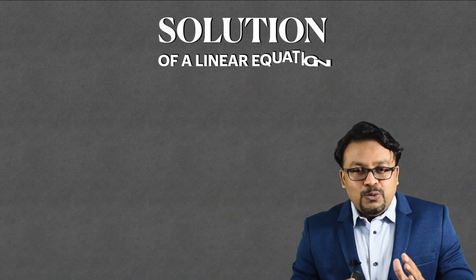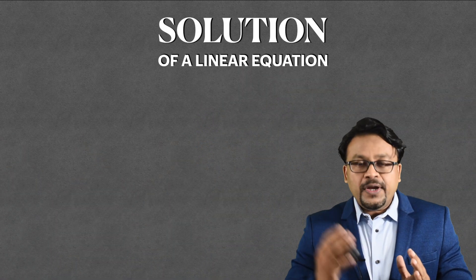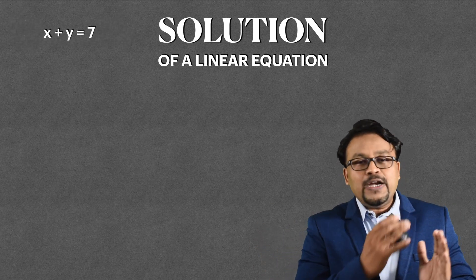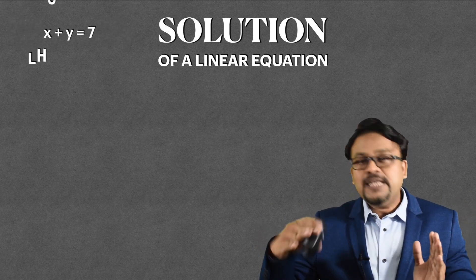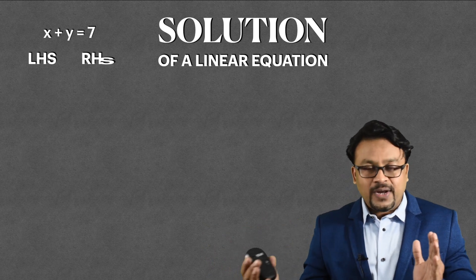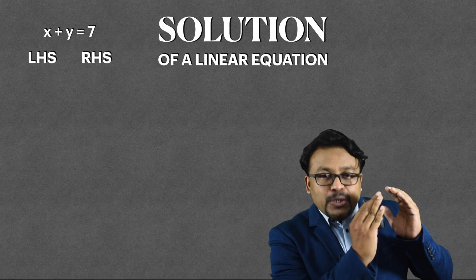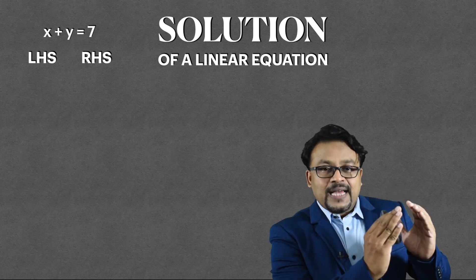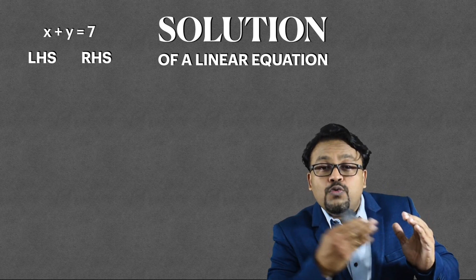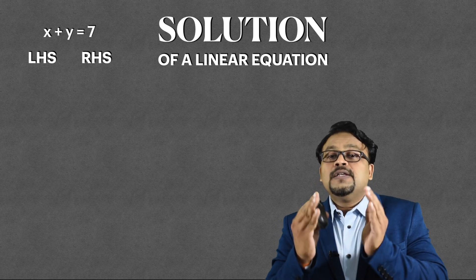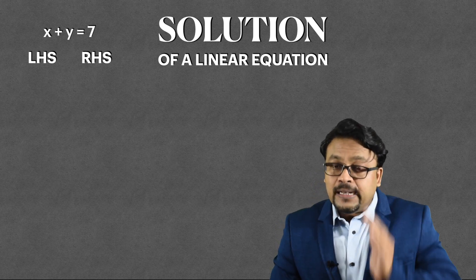Moving ahead, we are going to learn something called a solution. Now what do we mean by solution? Any equation has a left hand side and a right hand side. On the left hand side you have all the variables, and on the right hand side either you have a constant or you have 0. So if you take values of X and Y and substitute them on the left hand side, and if it happens to be equal to the right hand side, then those values are said to be the solution of that linear equation.